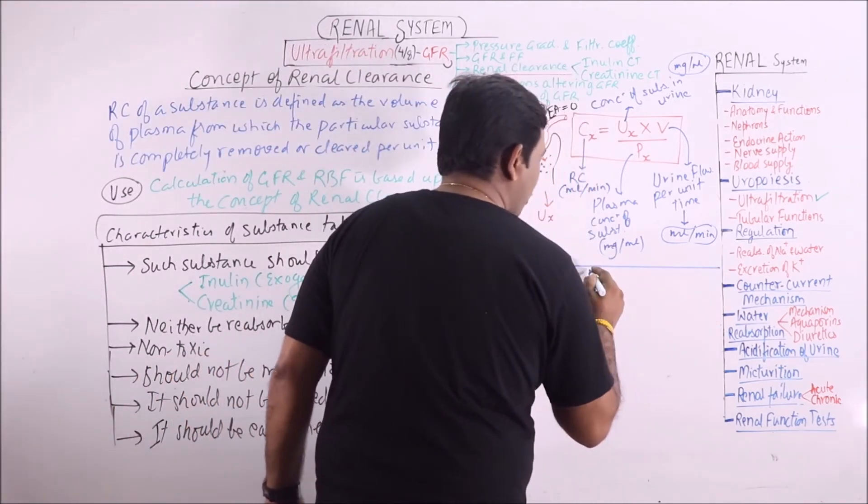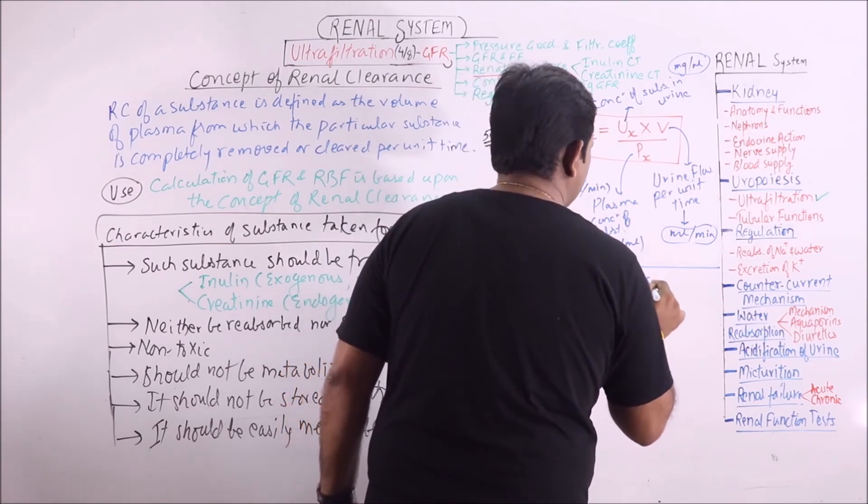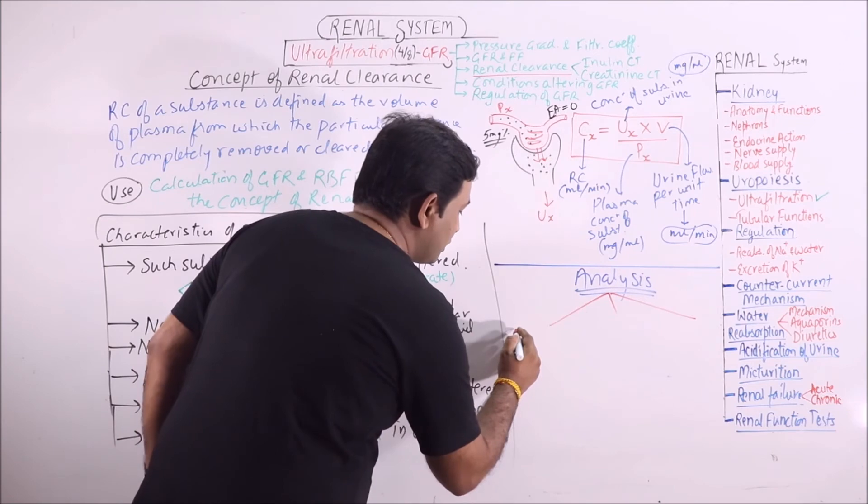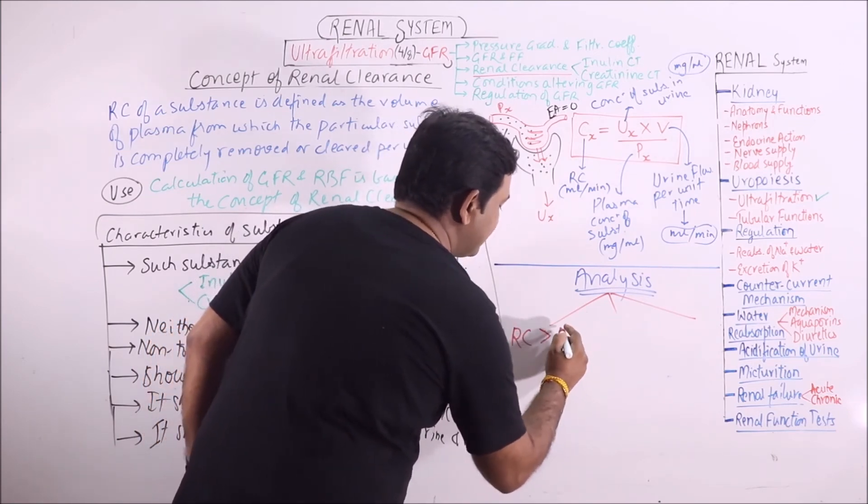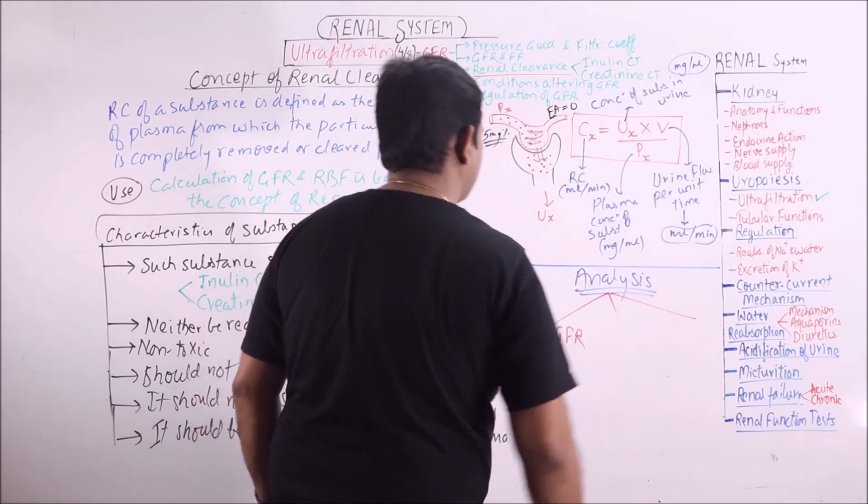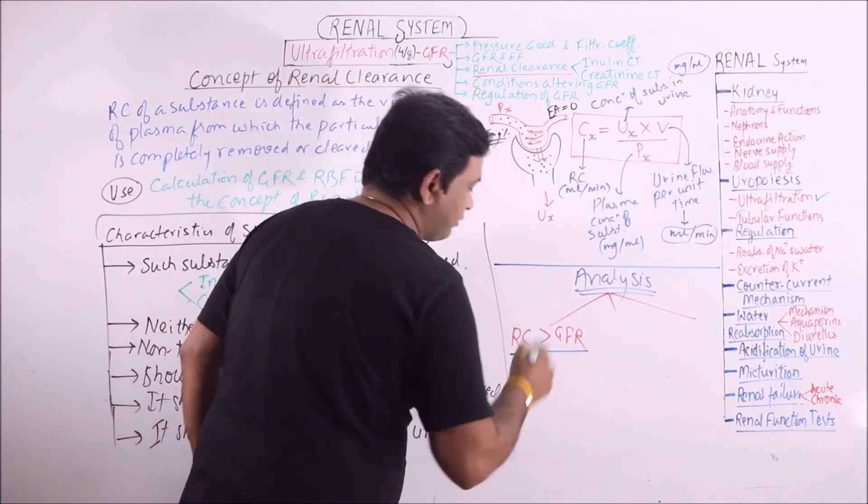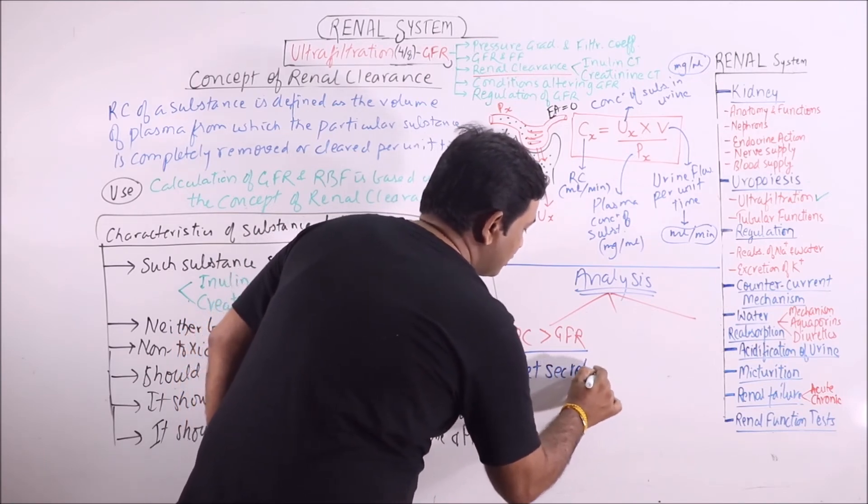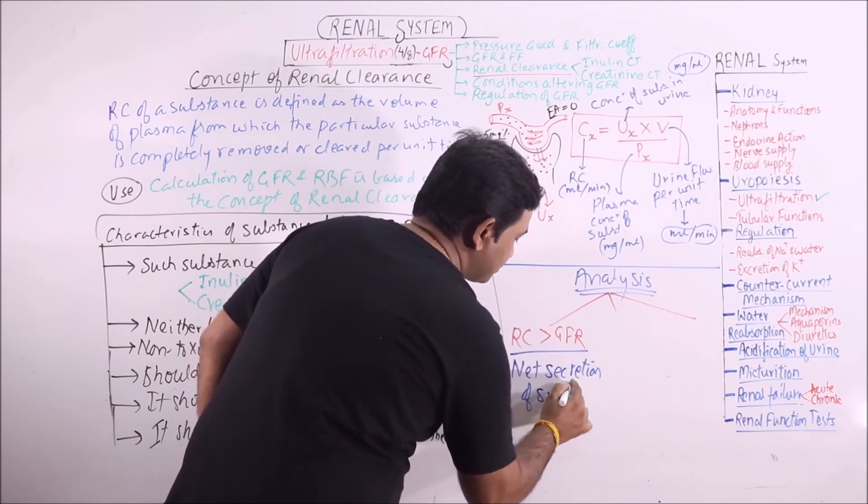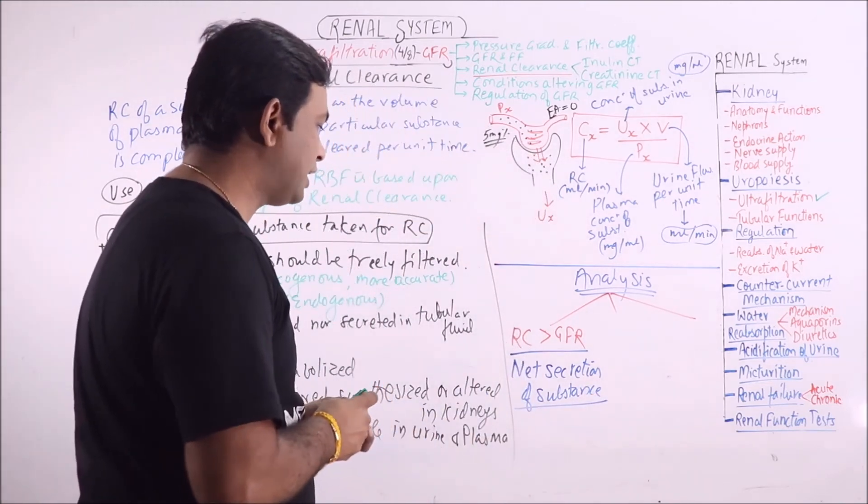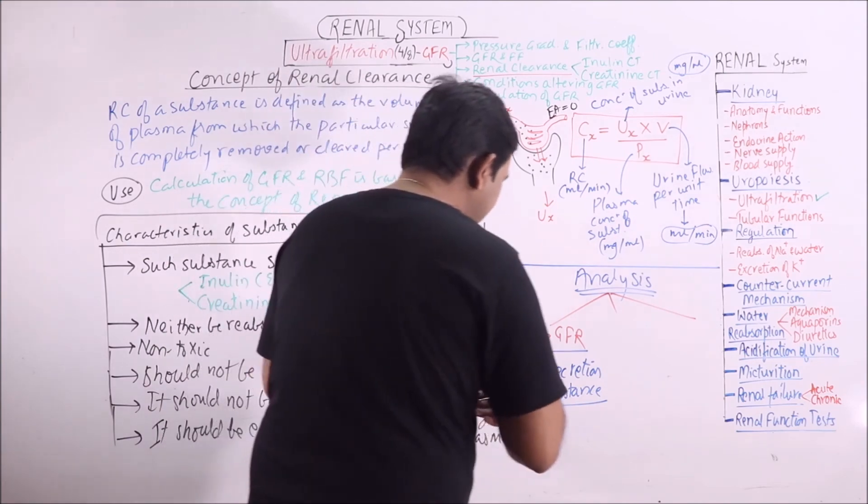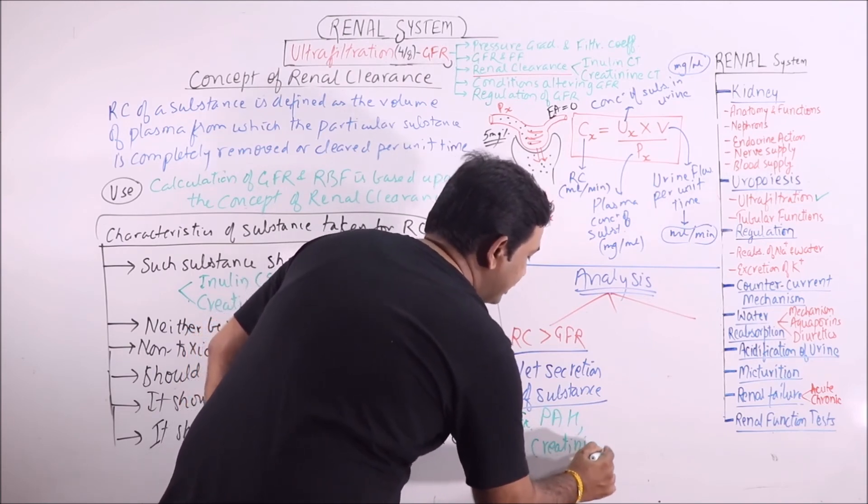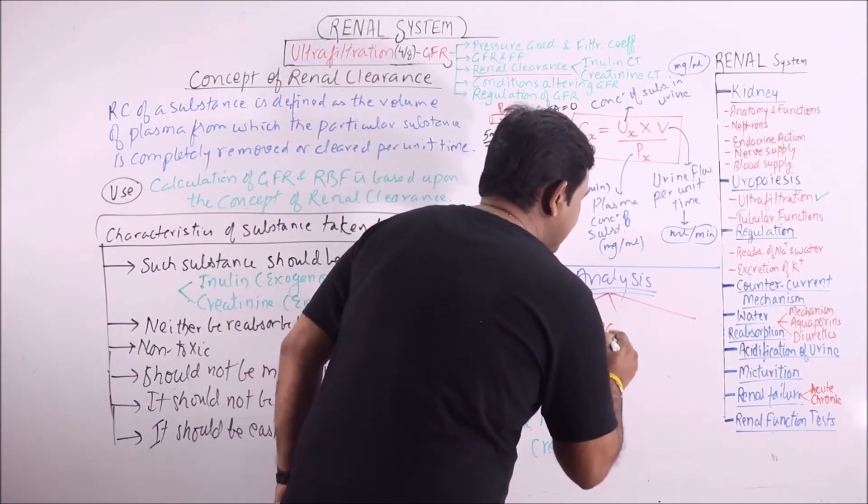Now, what may be the results? Results may be of three types. Renal clearance may be more than the actual GFR. If renal clearance is more than GFR, it means that there is net secretion of substance in the tubules. That is why more is excreted than filtered. Examples of such substances are para-amino-hippuric acid and creatinine.